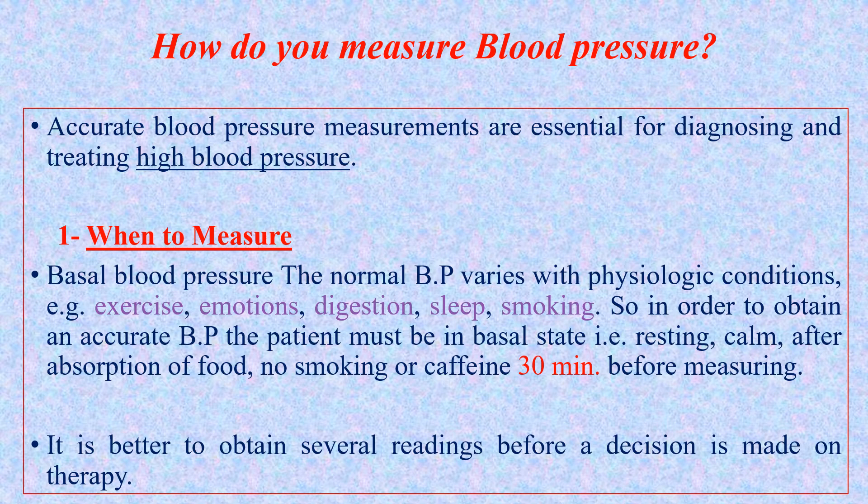This is because normal physiological blood pressure varies with normal physiological conditions. For example, you cannot measure someone's blood pressure when they are anxious or stressed. Similarly, it's not appropriate to measure it when someone is actively smoking, or on an empty stomach, or on a full stomach right after eating. That is why you must wait 30 minutes. No smoking or caffeine.